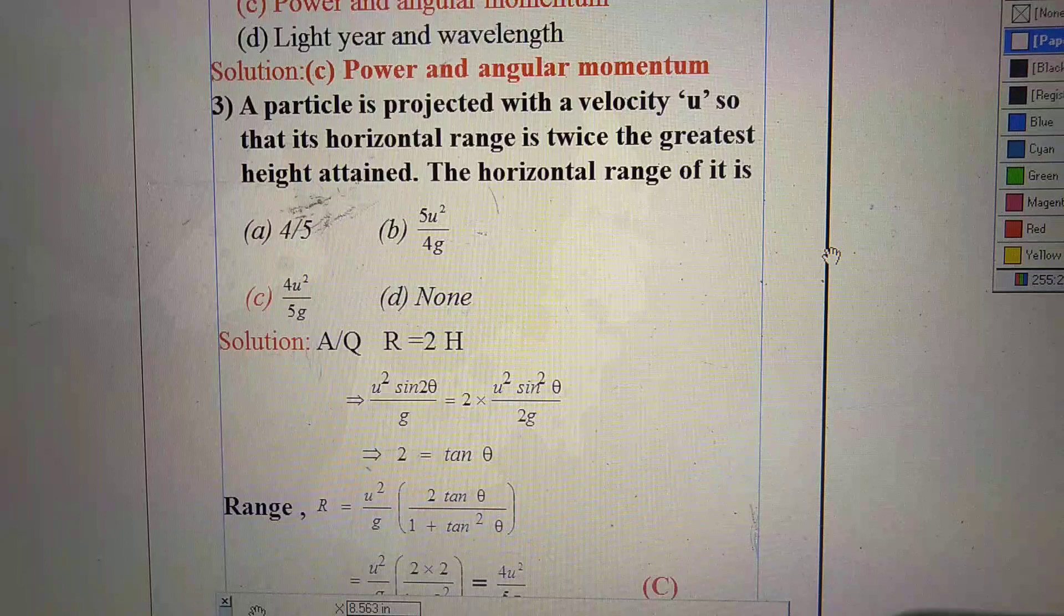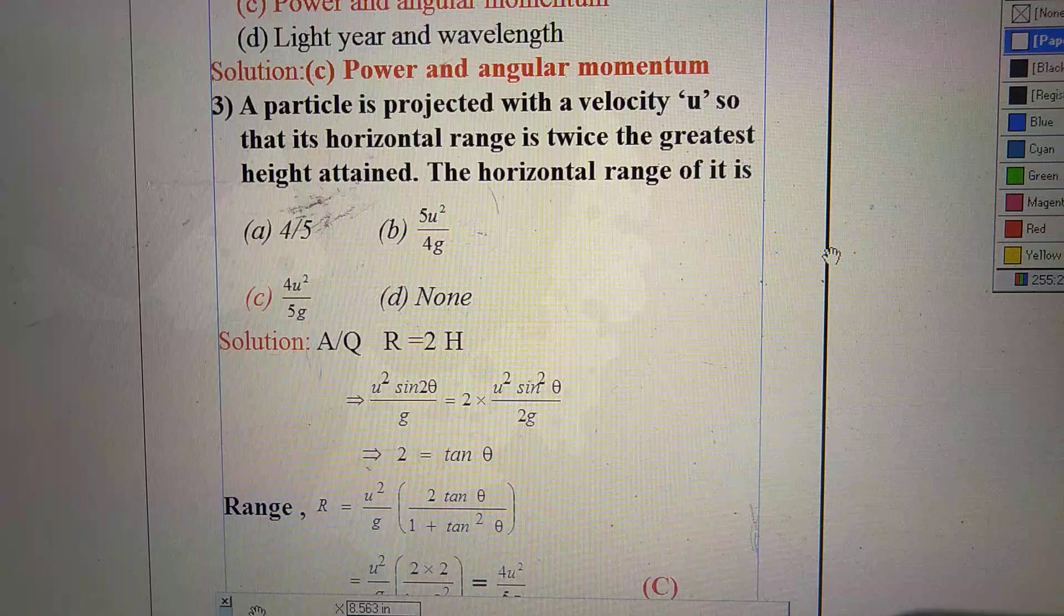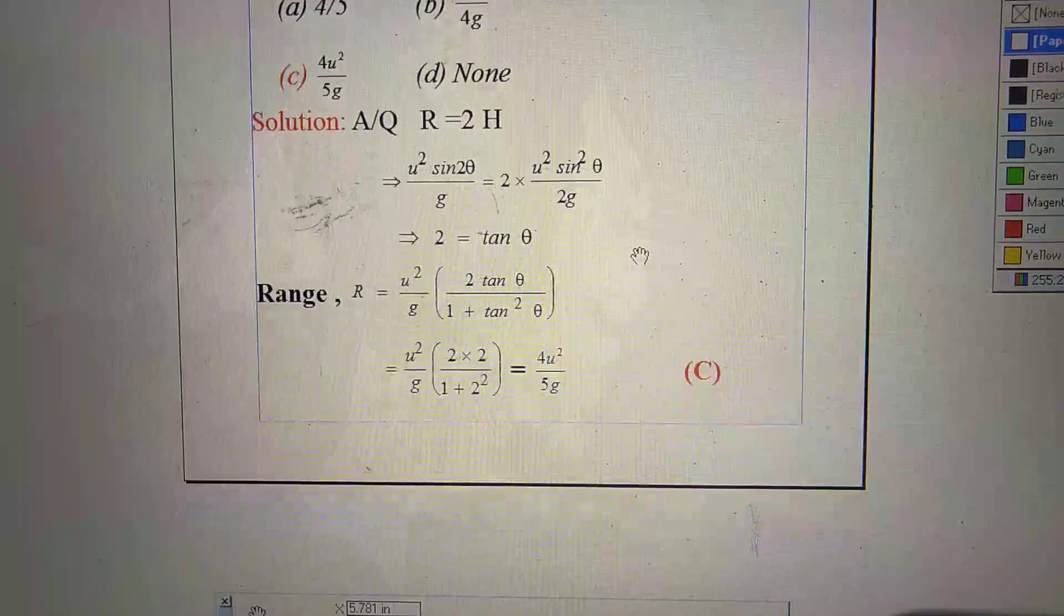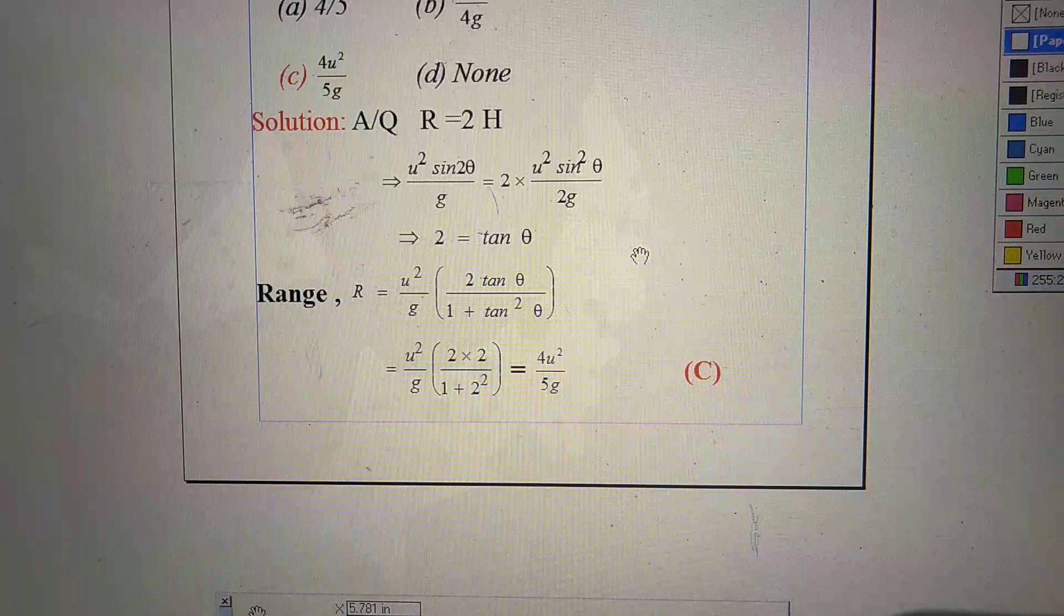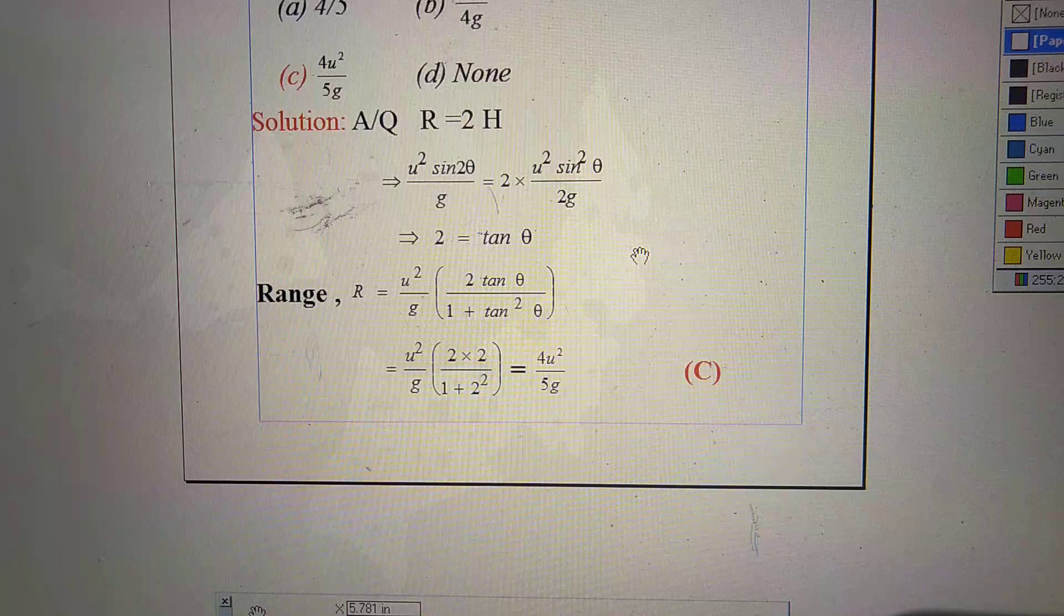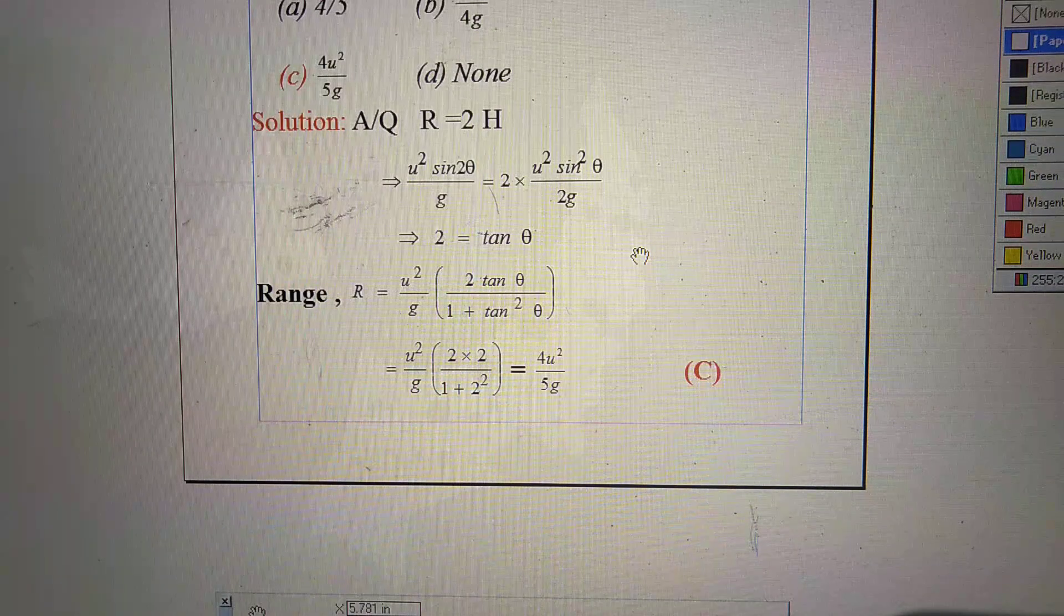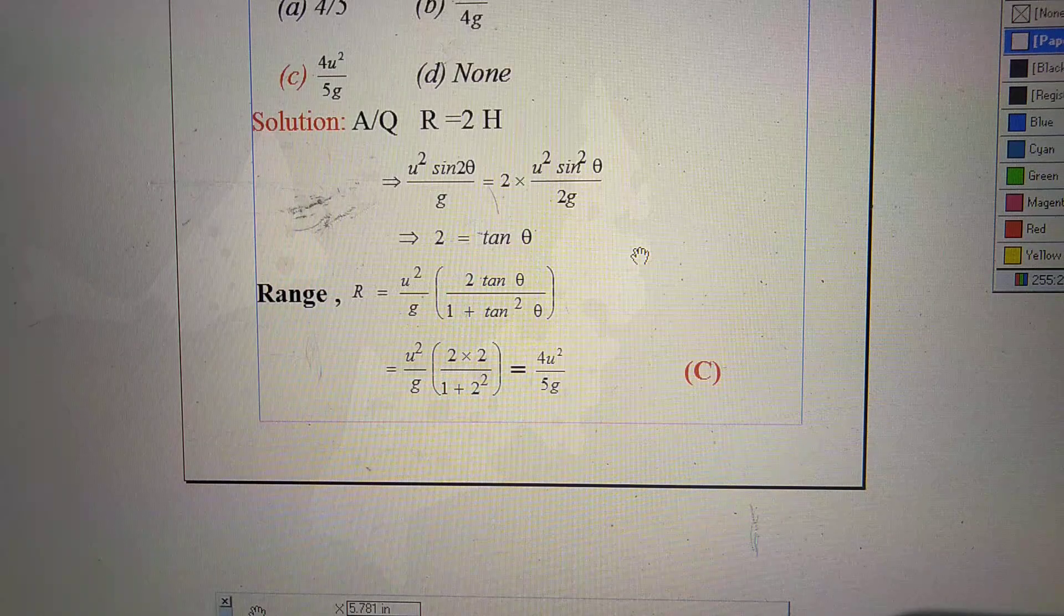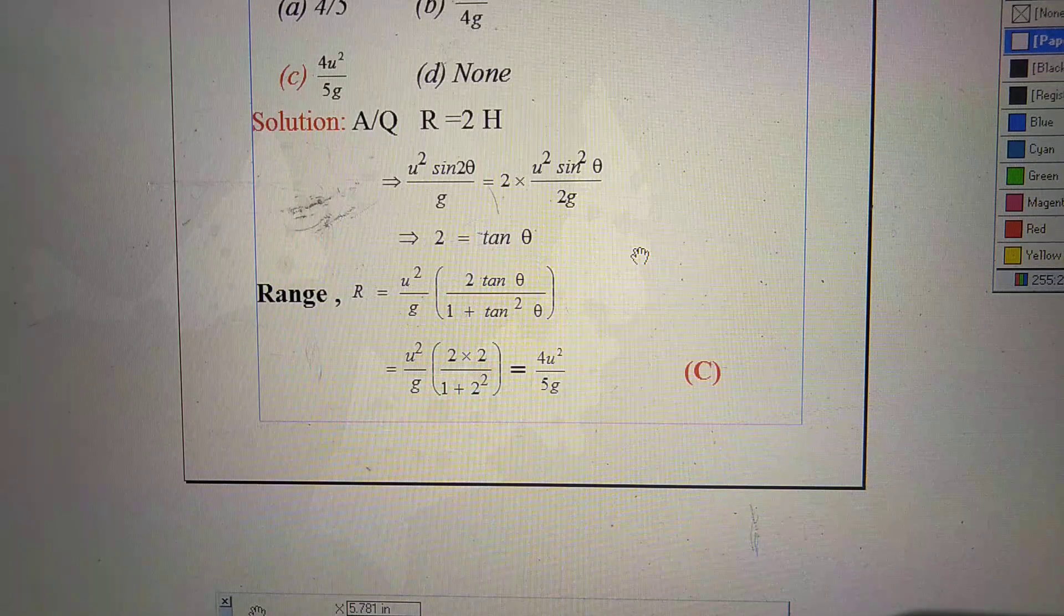As per question, R equal to 2H. We insert the formula of R and H. And after calculation, we find tan theta equal to 2. Again, we know the formula of range as u squared by g, 2 tan theta divided by 1 plus tan square theta. Here we insert the value of tan theta, that is tan theta equal to 2. After inserting the values, we calculate and finally find out the answer. The value of R is 4u squared by 5g. So right option is C.